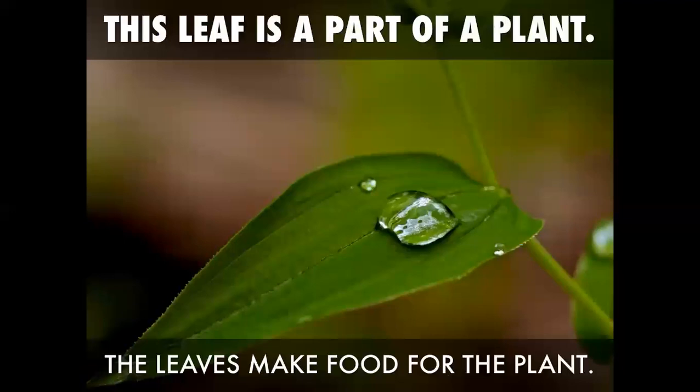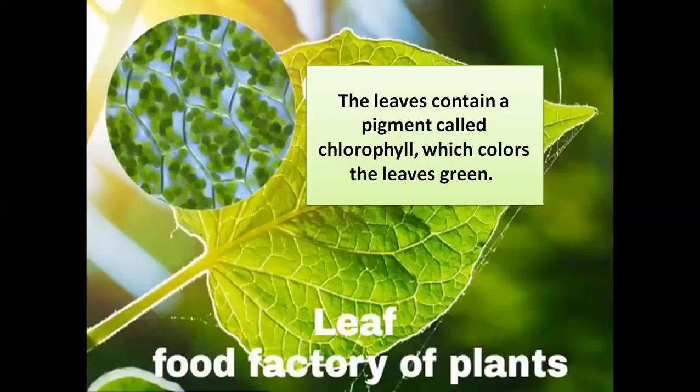Leaves make food for the plant. A leaf has a pigment that is green in color, called chlorophyll, which provides the green color. Plants need sunlight, water and air. Sunlight works in chlorophyll. This is why leaves are called the food factory of plants.